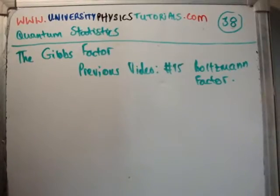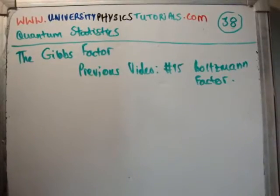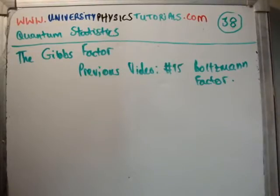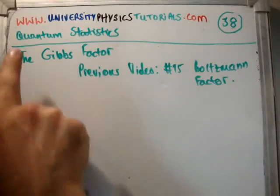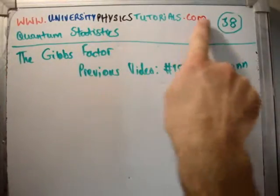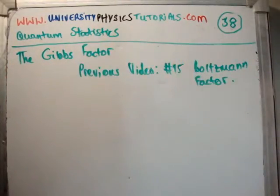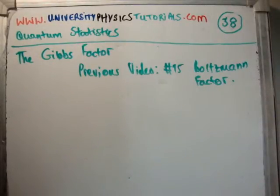In this video I'm going to continue on my tutorials on quantum statistics. This is number 38 and I'm going to derive the Gibbs factor. The previous video to this is where I derived the Boltzmann factor, and it's actually video number 15. I'd like to draw your attention to my website, universityofphysicstutorials.com, where I've got all my videos archived and listed.